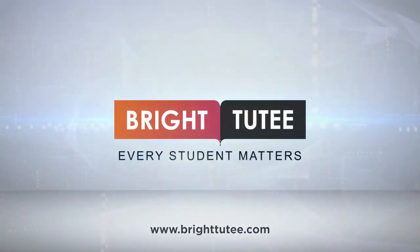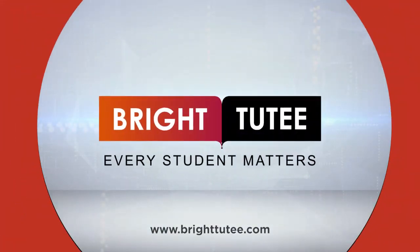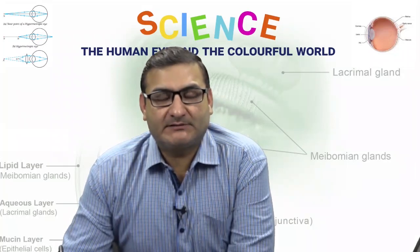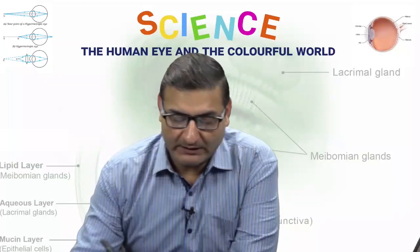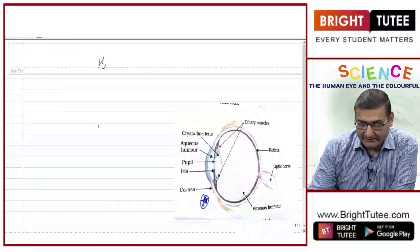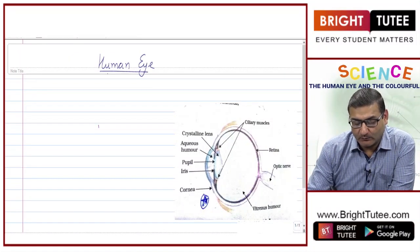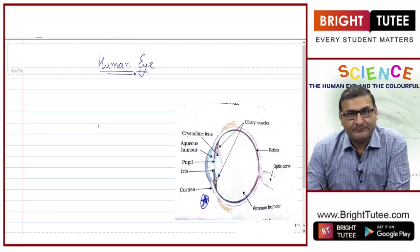Hello dear students, today we will be taking up the second chapter of Class 10 Physics — the Human Eye. The human eye is the best optical instrument in the world. There are so many devices like cameras which work on the rays of light, that is the reflection and refraction of light.